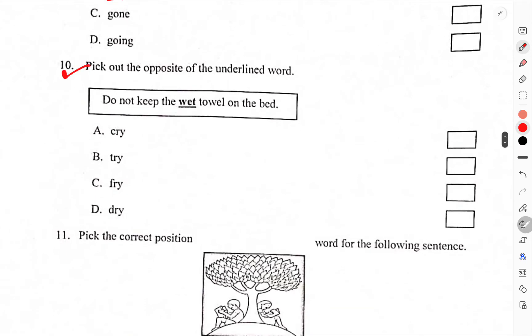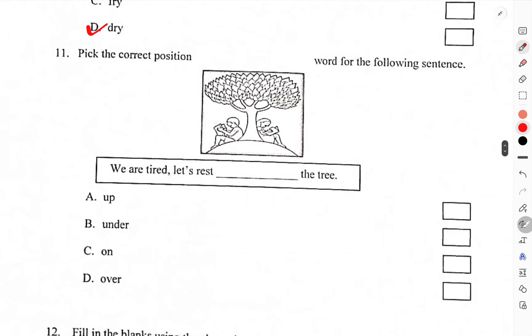Pick out the opposite of the underlined word wet. What is the opposite? Dry. Pick the correct position word for the following sentence. We were tired. Let's rest under the tree. Under the tree. B is the correct.